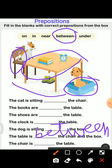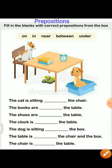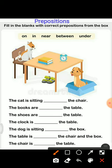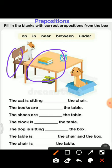Then next one: the chair is ___ the table. This is the chair and this is the table. Where is the chair? The chair is near the table. So we will choose the correct word from the box: near. And we will write here: the chair is near the table.